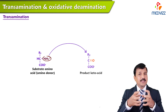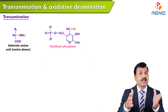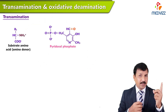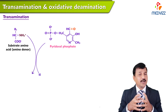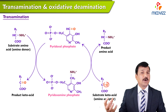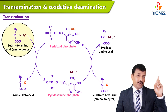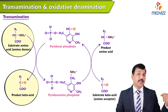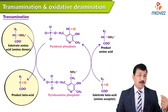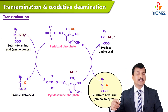During this process, pyridoxal phosphate — which is the active form of vitamin B6 pyridoxin — accepts the primary amino group from an amino acid and becomes pyridoxamine phosphate. That amino group is then given to an alpha-keto acid, which becomes an amino acid, while the original amino acid becomes an alpha-keto acid. So amino acid 1 becomes alpha-keto acid 1, and alpha-keto acid 2 becomes amino acid 2.